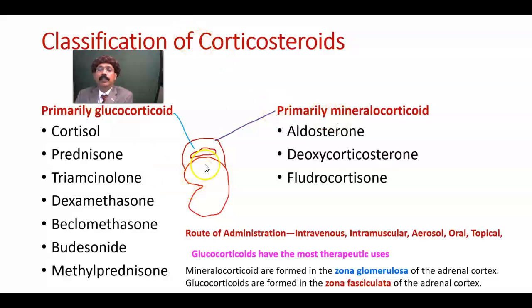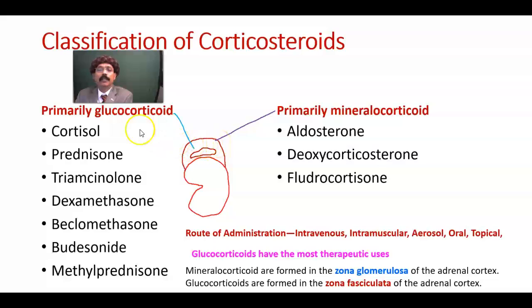This is the kidney, this is the adrenal cortex, this is the adrenal medulla. The mineralocorticoids are mostly formed from the zona glomerulosa, and the glucocorticoids are mostly formed from the zona fasciculata of the adrenal cortex.